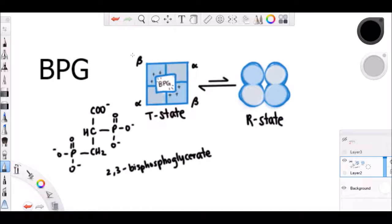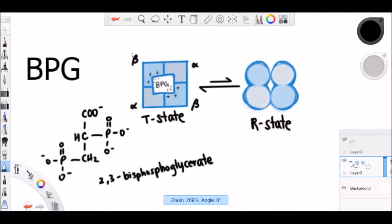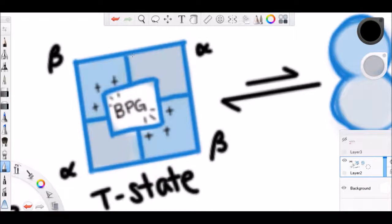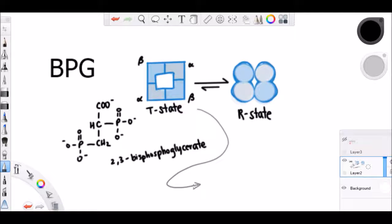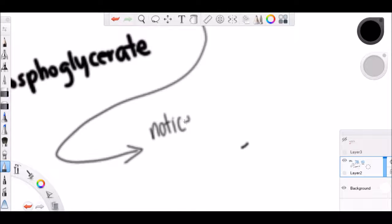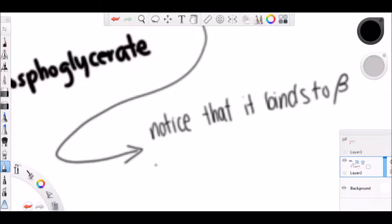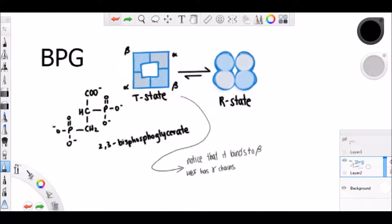This makes BPG a negative allosteric effector. This allosteric effect is known as a heterotropic effect since it occurs between two different ligands. So if it was the oxygen that actually affected it, it would be a homotropic effect. BPG is interesting because it actually has no effect to fetal hemoglobin. It binds to the beta chains, but it cannot bind to the gamma chains of the fetal hemoglobin.